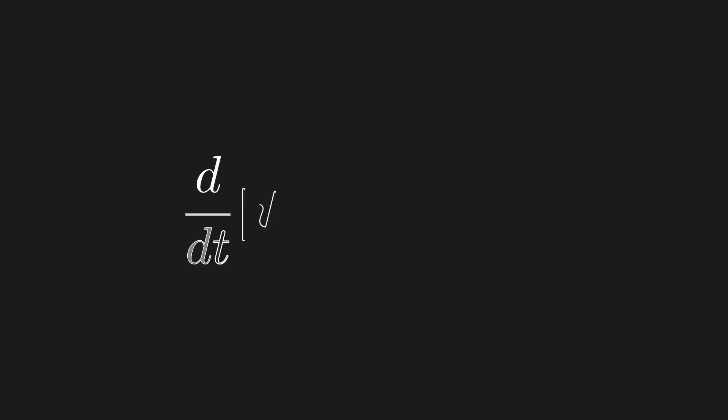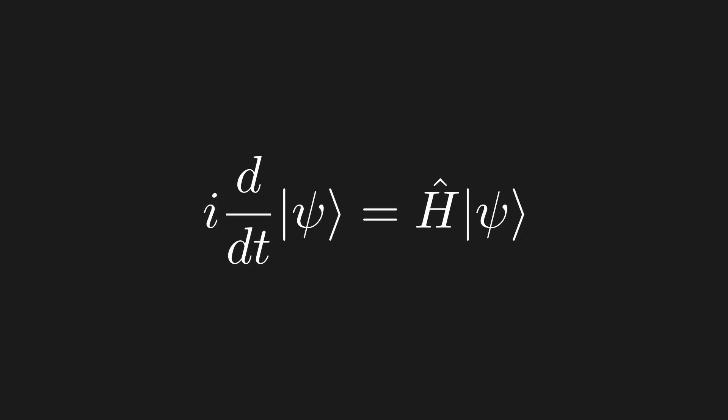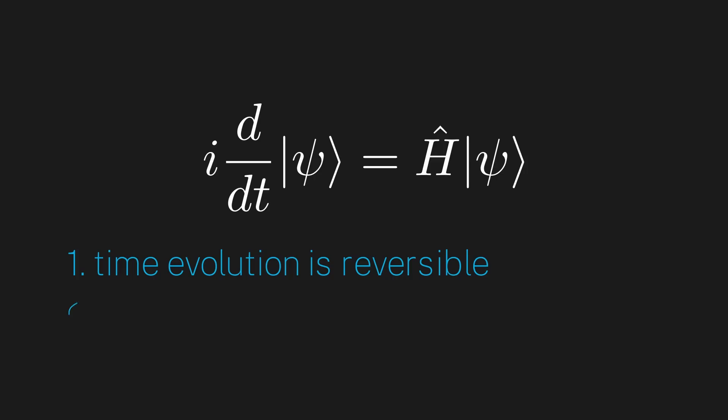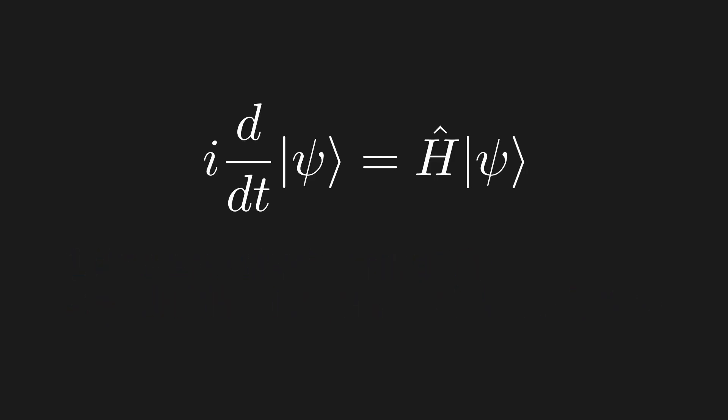Now let's move back to the differential equation we derived and plug in our expression for U-dot. Multiplying the i over and checking out what we've got: we have derived that i times the time derivative of our quantum state equals some Hermitian operator H acting on our state. Those of you familiar with the Schrödinger equation should be very excited right now — what we have just derived is the general form of the Schrödinger equation. Hopefully by this point you've realized that 90% of the Schrödinger equation comes from unitary time evolution, derived from just two principles: time evolution is reversible, and probability is conserved.